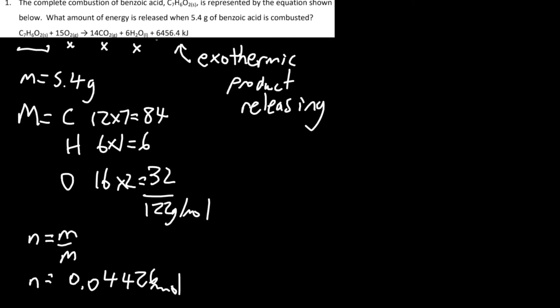And in this question, the statement is saying that if you had one mole of benzoic acid, you would produce 6,456.4 kilojoules of energy. So therefore, 6,456.4 kilojoules of energy per one mole.